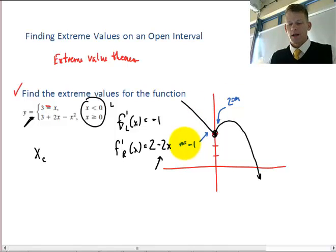And coming into the function, I have a slope of negative 1, so because of the difference in slopes, that creates a corner.